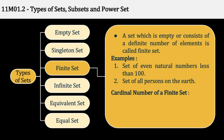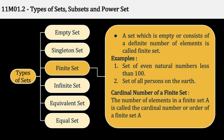Cardinal number of a finite set: the number of elements in a finite set A is called the cardinal number or the order of a finite set A. Cardinal number — यह term याद रखना है — इसका मतलब number of elements in the set। It is denoted by n(A) इस तरीके से।